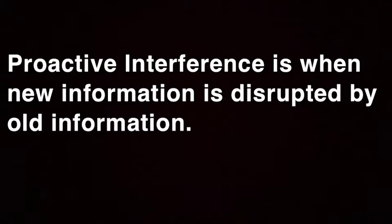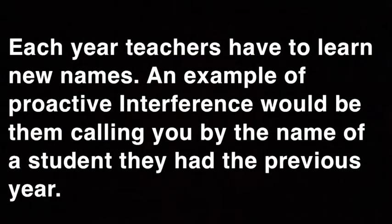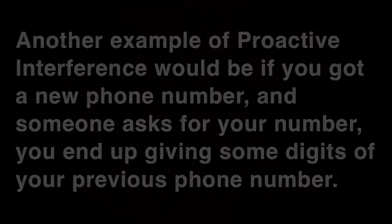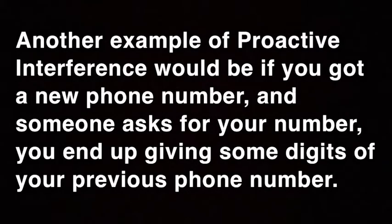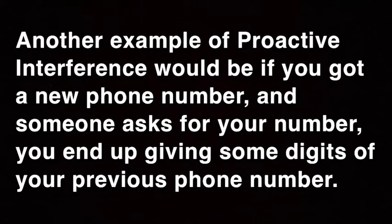Proactive interference is when new information is disrupted by old information. Each year, teachers have to learn new names — an example of proactive interference would be them calling you by the name of a student from the previous year. Another example would be if you got a new phone number and someone asks for it, you end up giving some digits of your previous phone number.